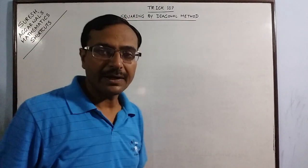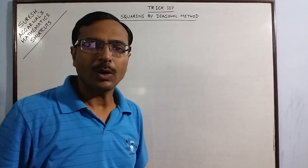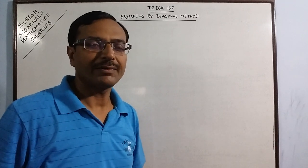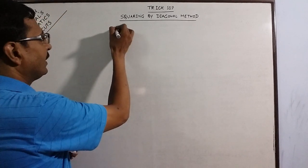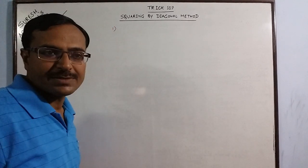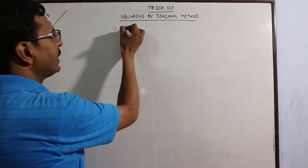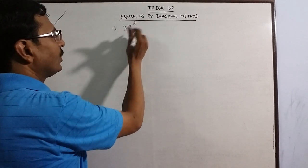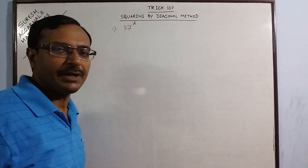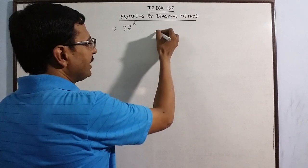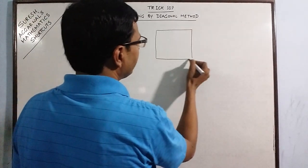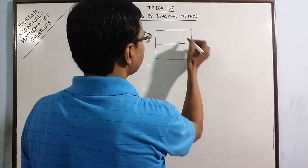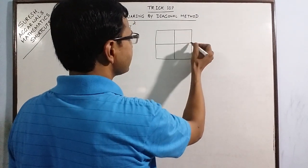This is called the diagonal method which is normally there in the books of class 8. So let me take one example and demonstrate this method. Say we have the square of 37. Now obviously 37 into 37 can be done but to create interest of students in mathematics you can tell them to practice finding the squares using this.